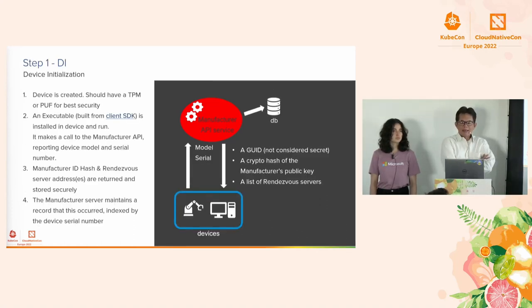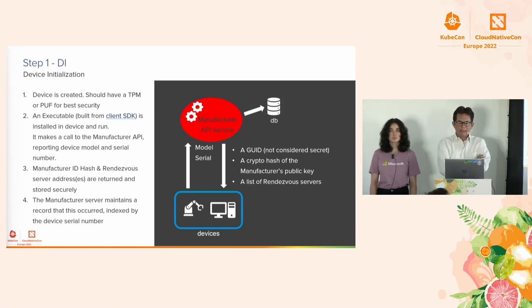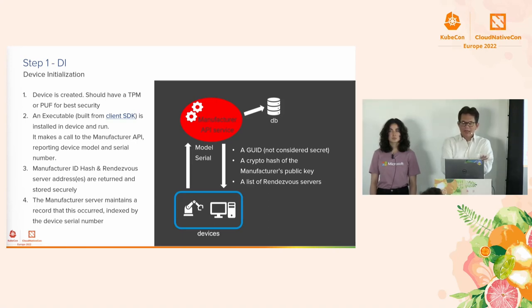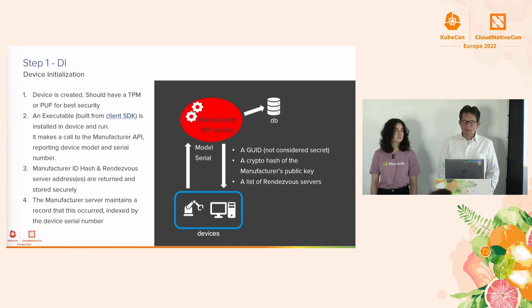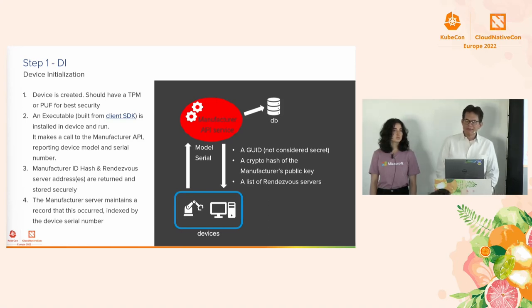After a device is made, it runs code that interacts with the manufacturer's server. A device GUID is generated, and the manufacturer's server makes a record of the new device's model and serial number. The device itself records a crypto hash of the manufacturer's key and the address of the manufacturer-operated rendezvous server that it contacts upon first power-up. This is stored in a TPM or other restricted operating environment on the device. For demo purposes you could leave it on the file system, but that's not safe for production.